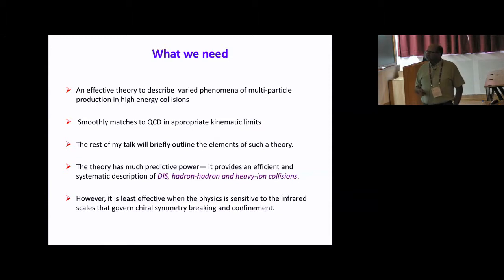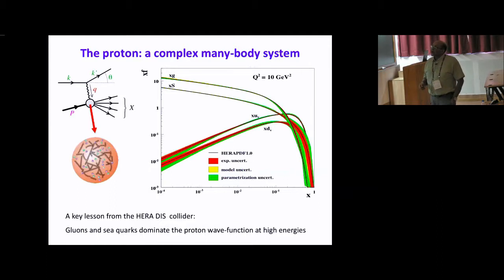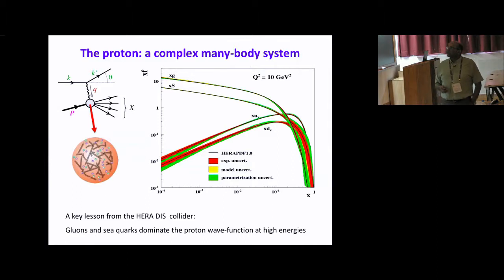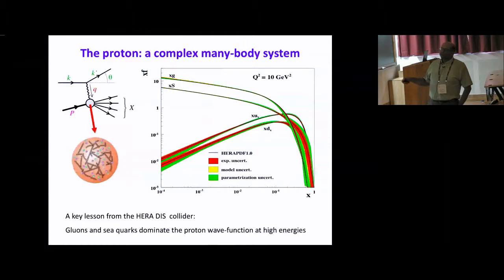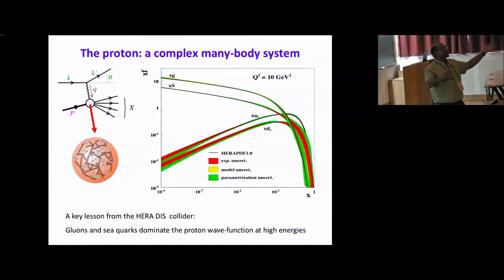One takeaway from my talk yesterday should have been that the proton is a complex many-body system. It's not just three valence quarks, but at very high energies it can fluctuate into states containing large numbers of gluons and quark-antiquark pairs — the latter being called sea quarks.